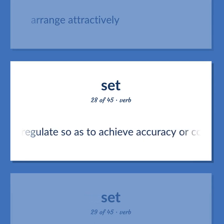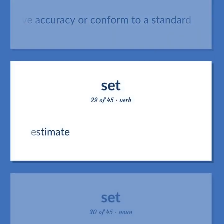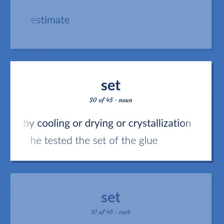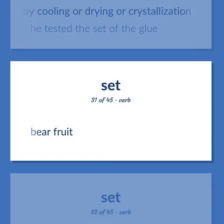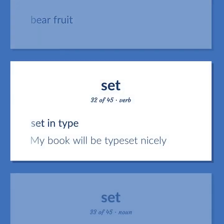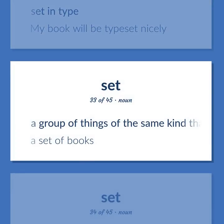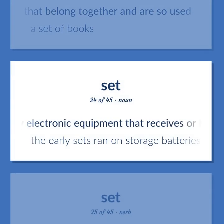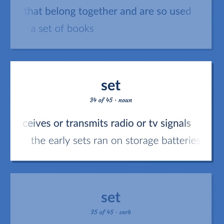Set: Arrange attractively. Alter or regulate so as to achieve accuracy or conform to a standard. Estimate. The process of becoming hard or solid by cooling or drying or crystallization — he tested the set of the glue. Bare fruit. Set in type — my book will be typeset nicely. A group of things of the same kind that belong together and are so used — a set of books. Any electronic equipment that receives or transmits radio or TV signals — the early sets ran on storage batteries.